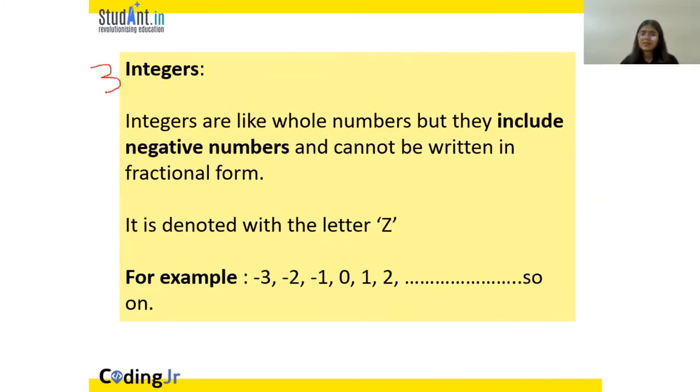Next section, we have integers. What are integers? It's like whole numbers, but they also include negative numbers. So, integers include whole numbers as well as negative numbers. What are negative numbers? Minus 1, minus 2, minus 3. All the numbers that exist below 0. So, integers include negative numbers and whole numbers. But they do not include fractional form, fractional numbers like 3 by 2, 4 by 3. All these numbers are not included in integers. Example: minus 3, minus 4, minus 1, minus 2, 0, 1, 2, 3, 4. All of them are integers. It is denoted by Z.